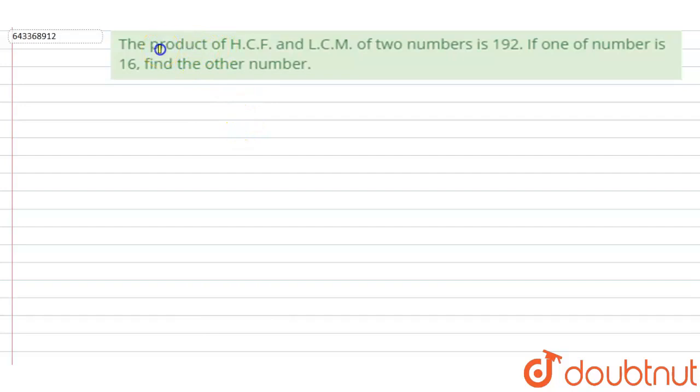The question says that the product of HCF and LCM of two numbers is 192. If one of the number is 16, find the other number. So in the question it is given that product of HCF and LCM